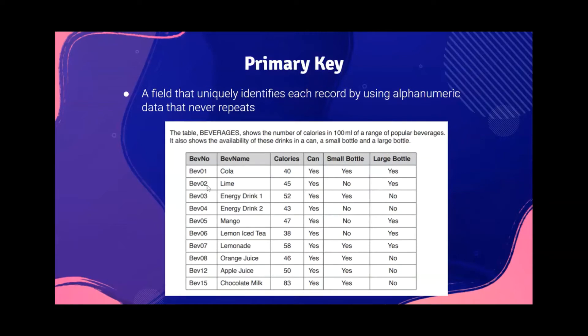Alphanumeric data is data that has both text and numbers. Each value is different and does not repeat at all, which makes it the primary key.